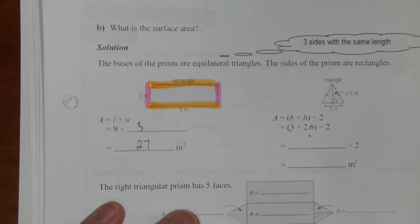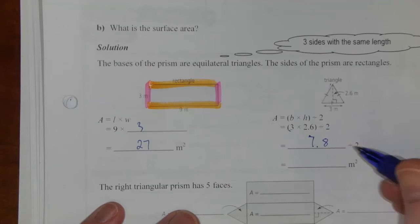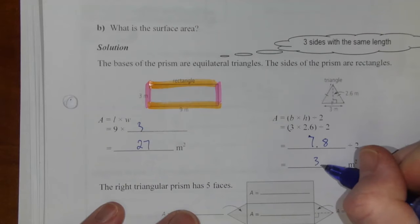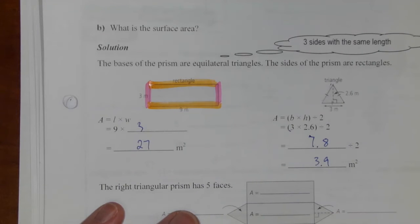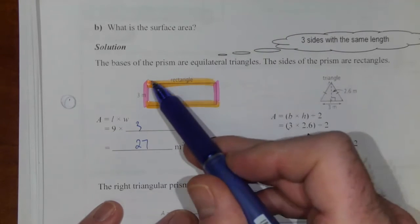So 3 times 2.6 gives us 7.8, and then we're going to divide that by 2 to give us 3.9 meters squared. And that is for one triangle. 27 meters squared is for one rectangle.